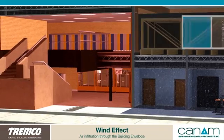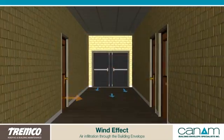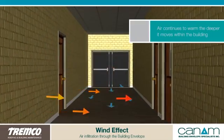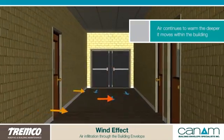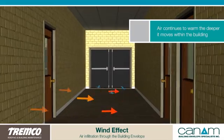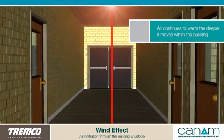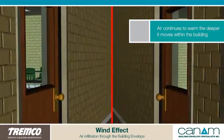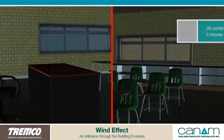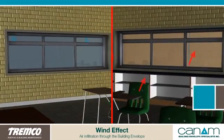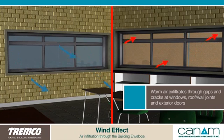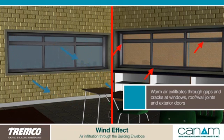Air continues to grow warmer as it moves within the building. This causes air to exfiltrate through gaps and cracks at windows, roof-wall joints, and exterior doors, as it is pushed out by the colder air behind it.